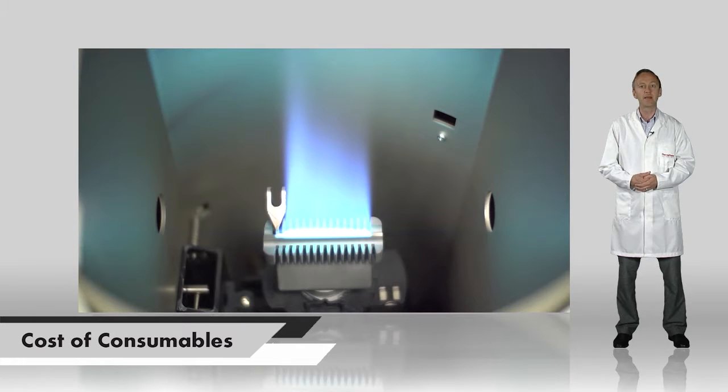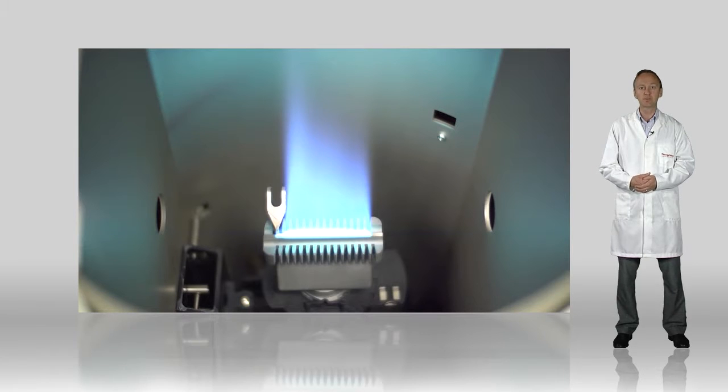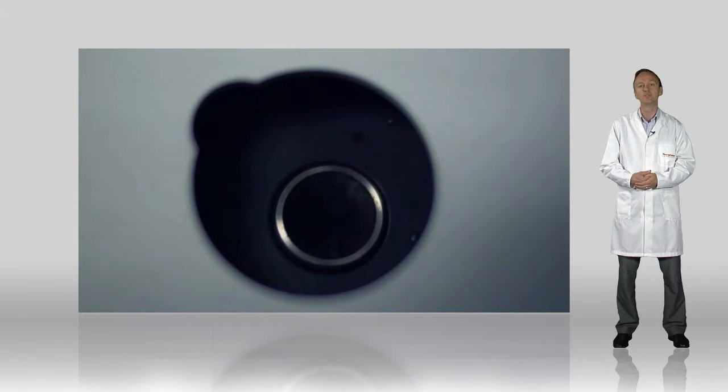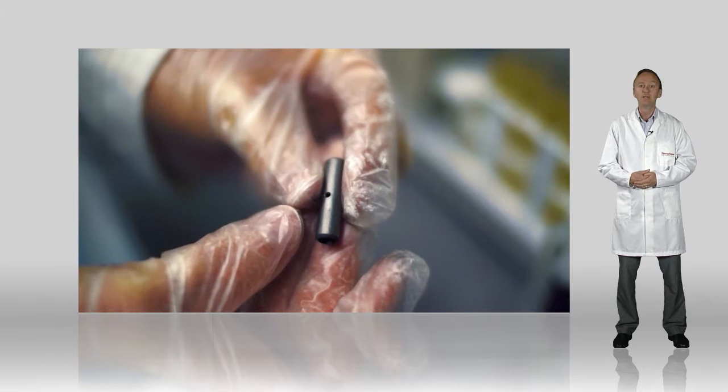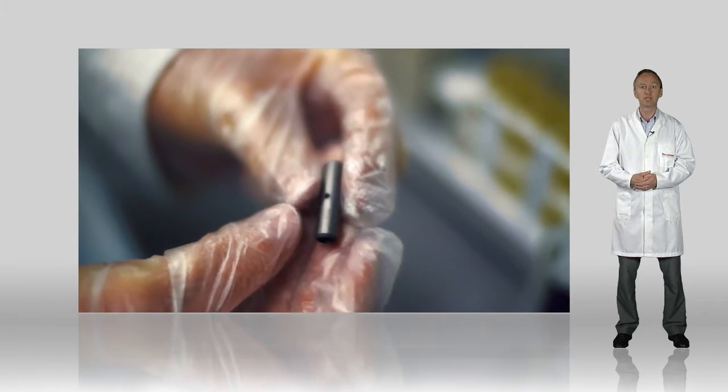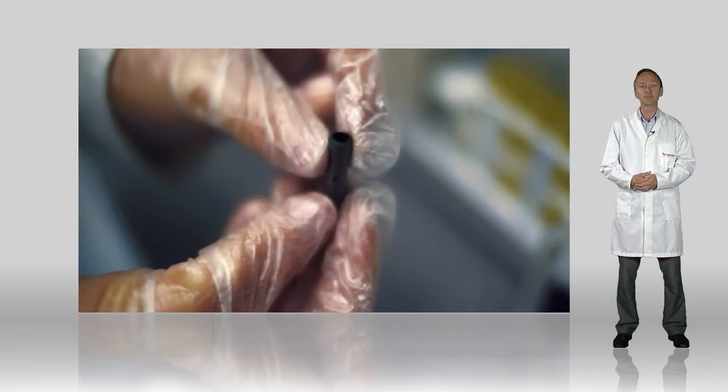The main cost of flame AAs are the gases used to create the flame. Our AA spectrometers are designed to ensure that gas flows are the lowest possible. The main expense of furnace AAs comes from the graphite furnace cuvettes, which typically only last for a few hundred analyses before performance is affected. So we created the extended lifetime cuvette that can perform thousands of analyses without any decrease in performance.